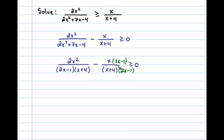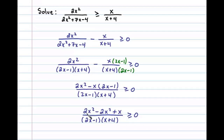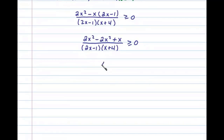Now that we have a common denominator, we can subtract the numerators and write the result over the single common denominator. We can simplify the numerator by distributing the negative x: negative x times 2x is negative 2x squared, and negative x times negative 1 is plus x. In the numerator, 2x squared minus 2x squared adds up to 0.